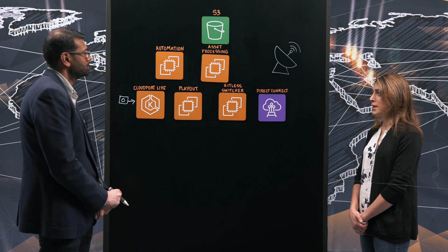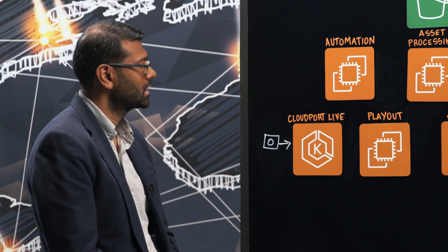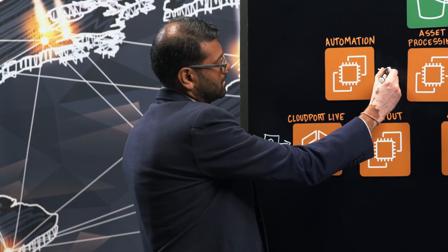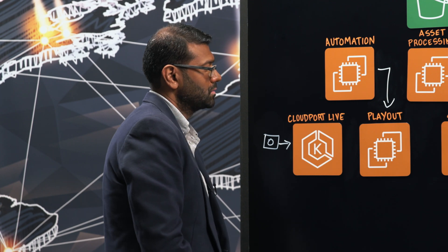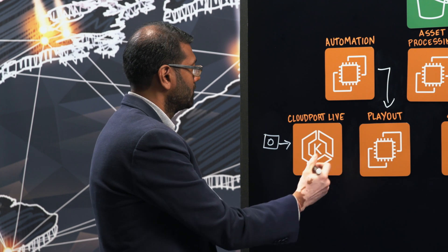So walk us through the next step. You schedule it, it's supposed to be broadcast next day. What happens? In this case, the automation service is responsible for scheduling that asset—in this case the live event. So the automation service speaks to our cloud playout, which is responsible for playing out the event which is to be broadcasted tomorrow. And that cloud playout will get that feed from CloudPort Live.